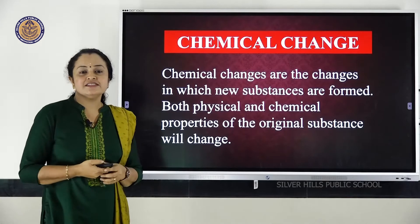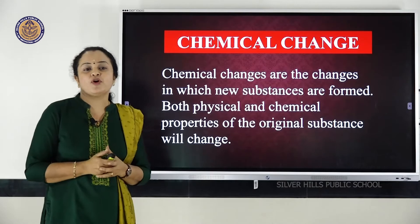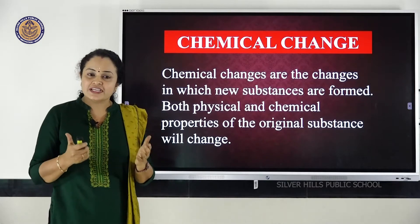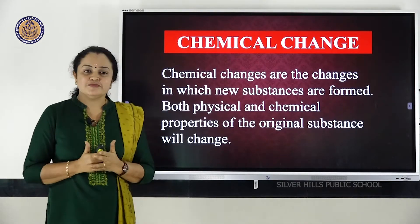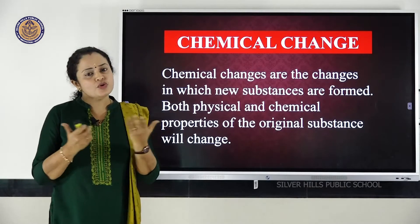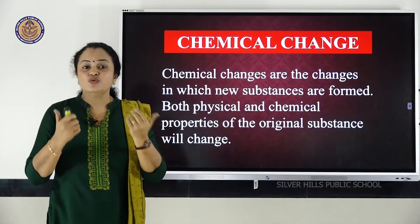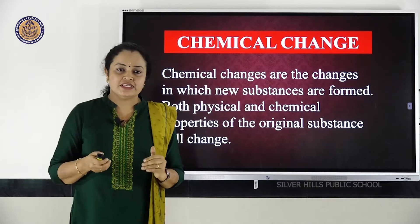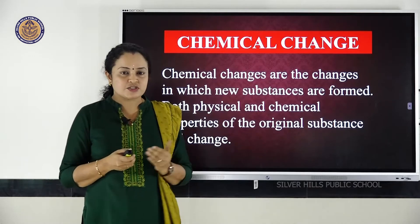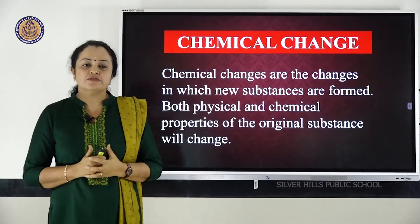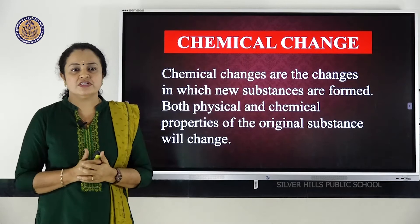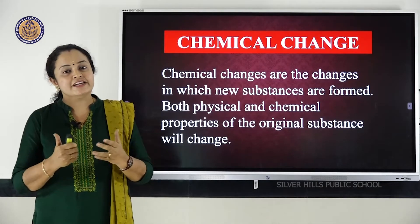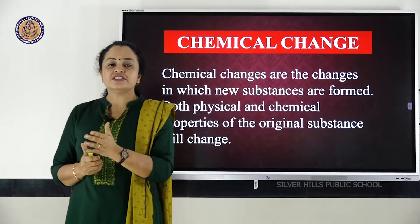Chemical changes are changes in which new substances are formed, and both physical and chemical properties of the original substance change. The heading itself gives you the difference: physical change means the physical property of the substance changes; chemical change means you will get a new substance. In physical change, no new substances are formed, but in chemical changes, an entirely new substance is forming. You should be able to identify and categorize changes as reversible, irreversible, physical, or chemical.